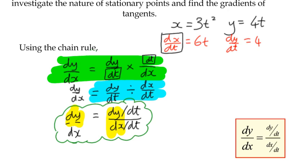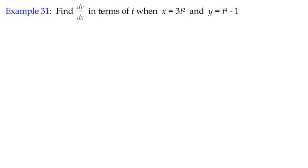So let's have a look at this example 31, find dy by dx in terms of t when x is 3t squared and y is t to the 4 minus 1. So we could start off, first of all, I always suggest doing the differentiating first and seeing what we've got and then we can decide which form of the dy by dx to use. So in this case here, dx by dt is going to become 6t and dy by dt becomes 4t cubed.